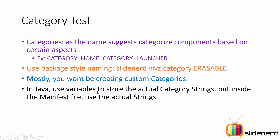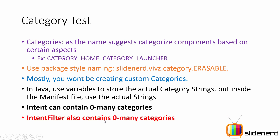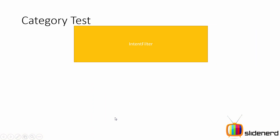The same rules apply: in Java you use variables that contain the actual values, but inside the manifest you're supposed to use the actual string like slnerd.webs.category.erasable. An intent can contain zero to many categories because it's not compulsory to specify a category inside every intent. At the same time, an intent filter also contains zero to many categories.